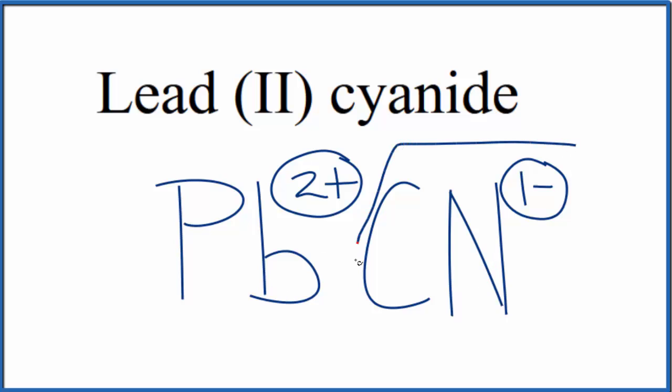The 1- here applies to the whole cyanide ion. So if we had 2 cyanide ions, 2 times 1-, that gives us 2-, that would balance the 2+, give us a net charge of zero.